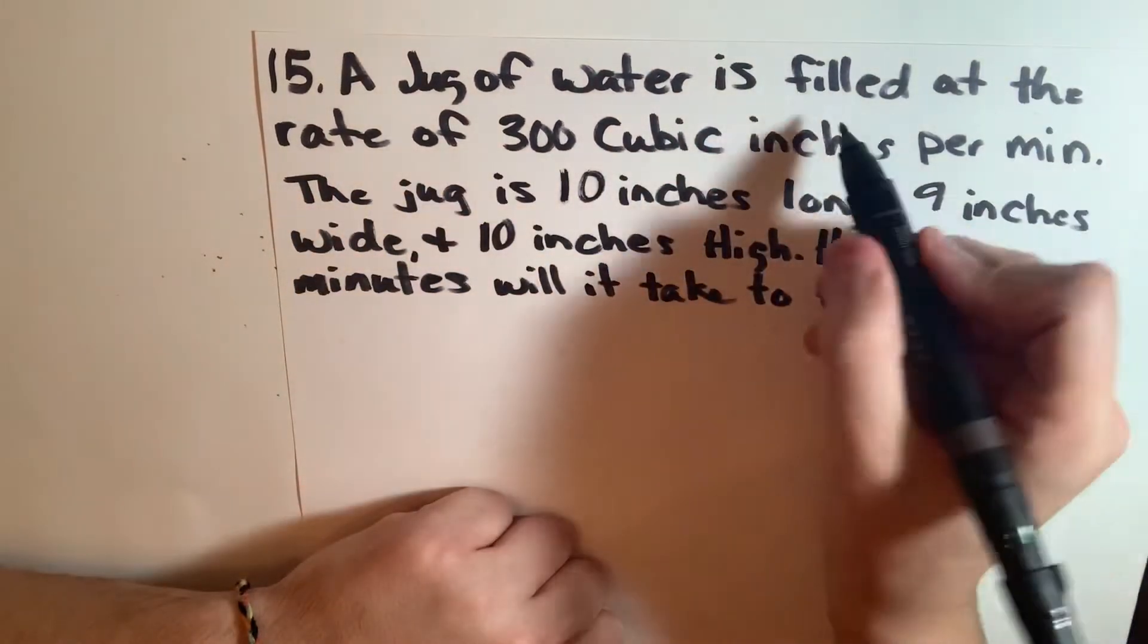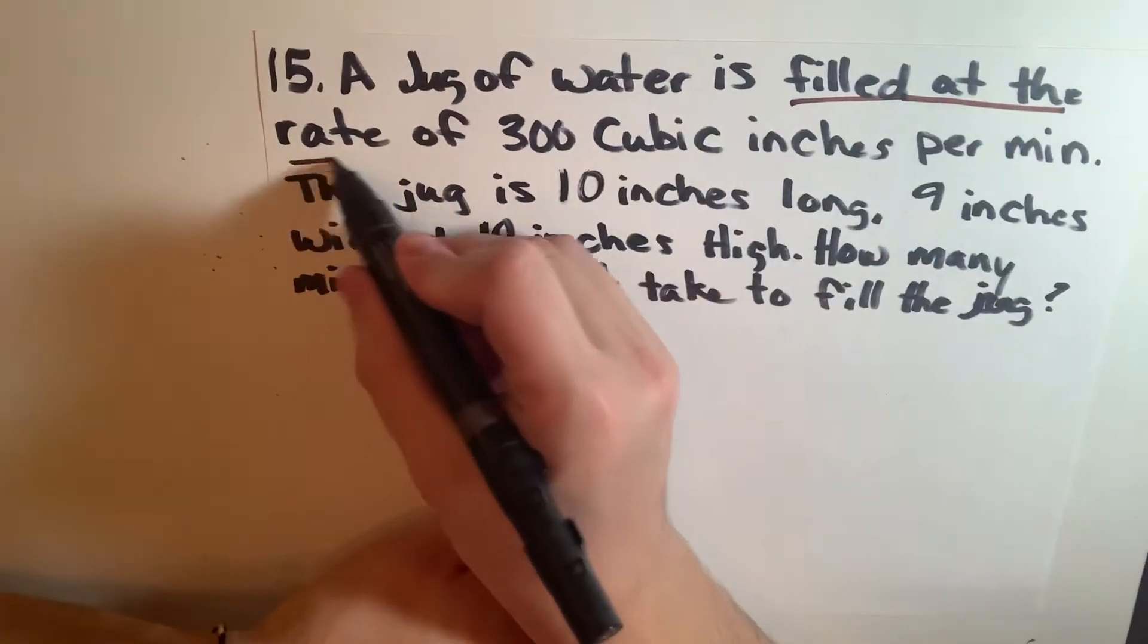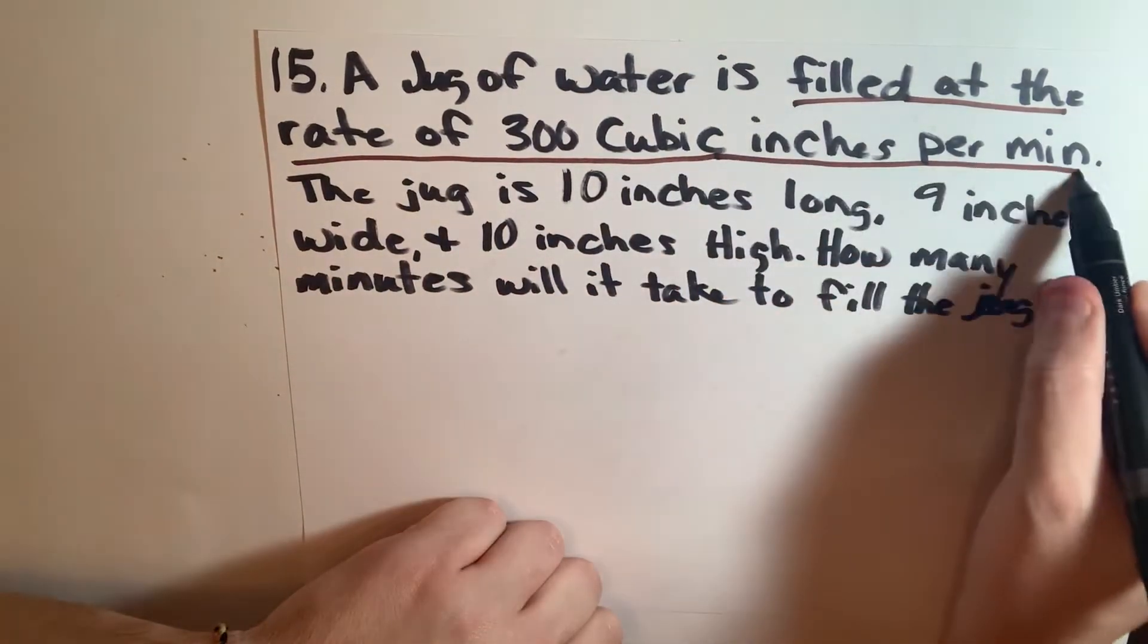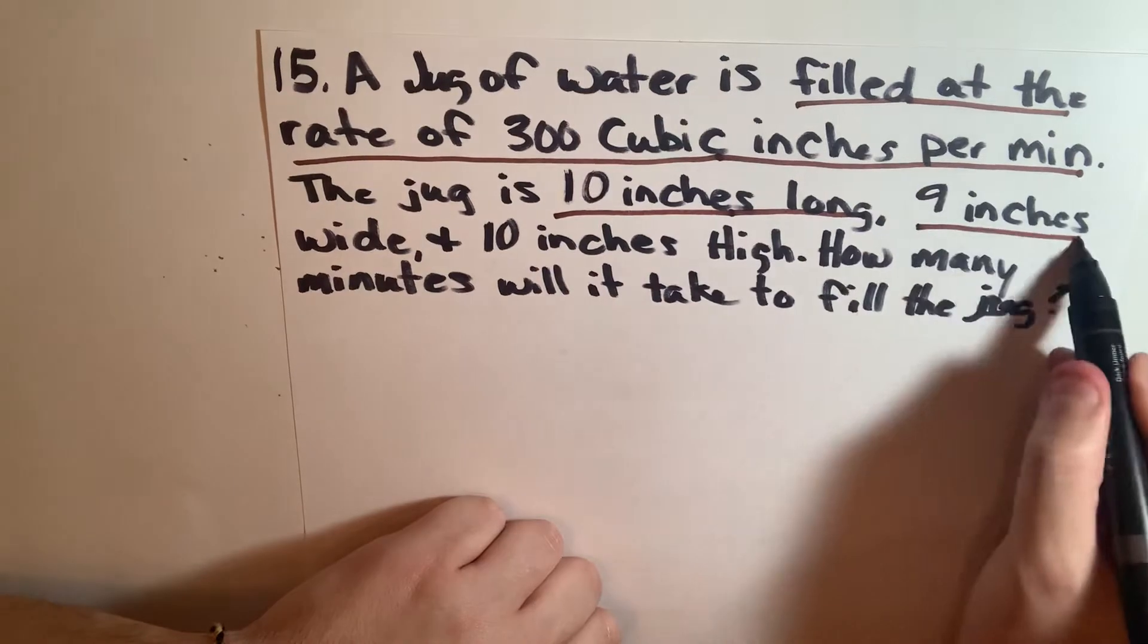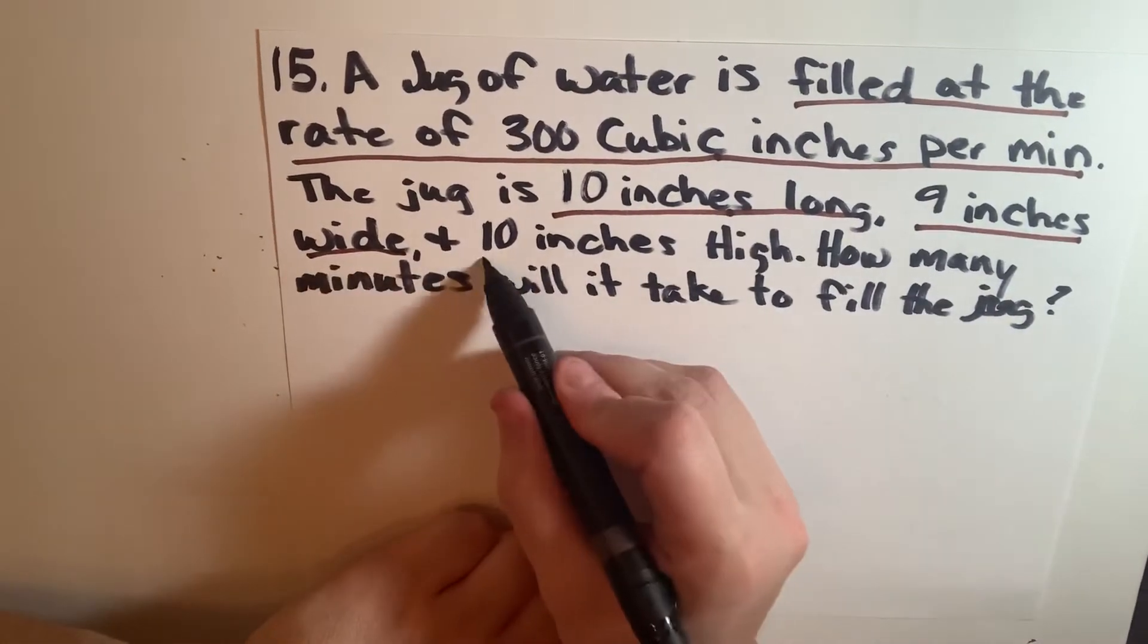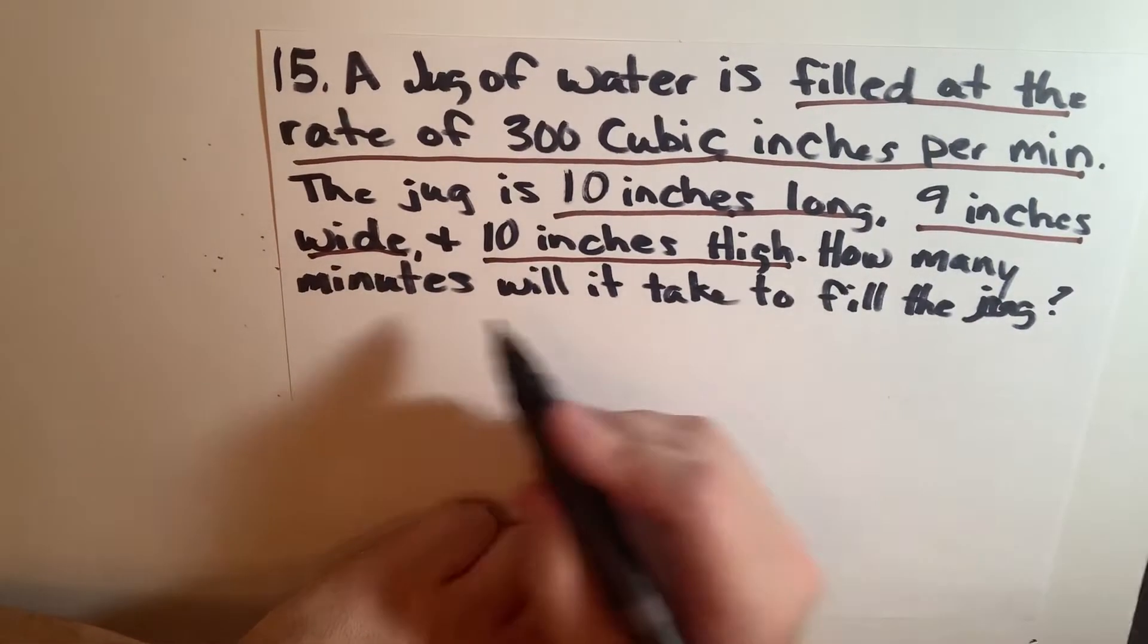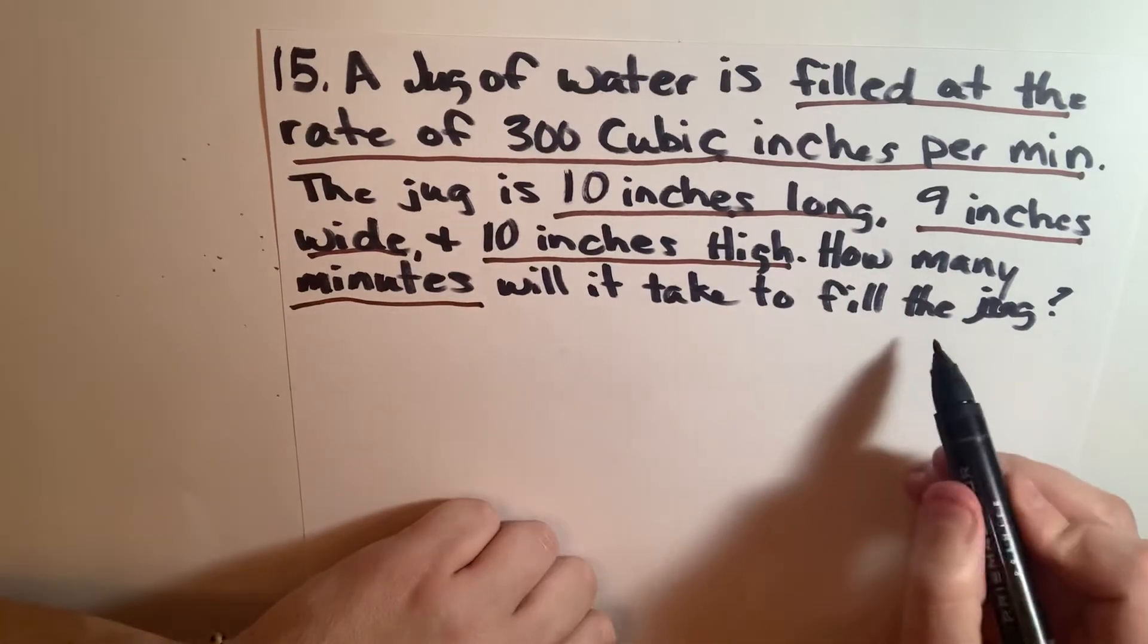For question 15, it says a jug of water is filled at the rate of 300 cubic inches per minute. The jug is 10 inches long, 9 inches wide, and 10 inches high. How many minutes will it take to fill the jug?